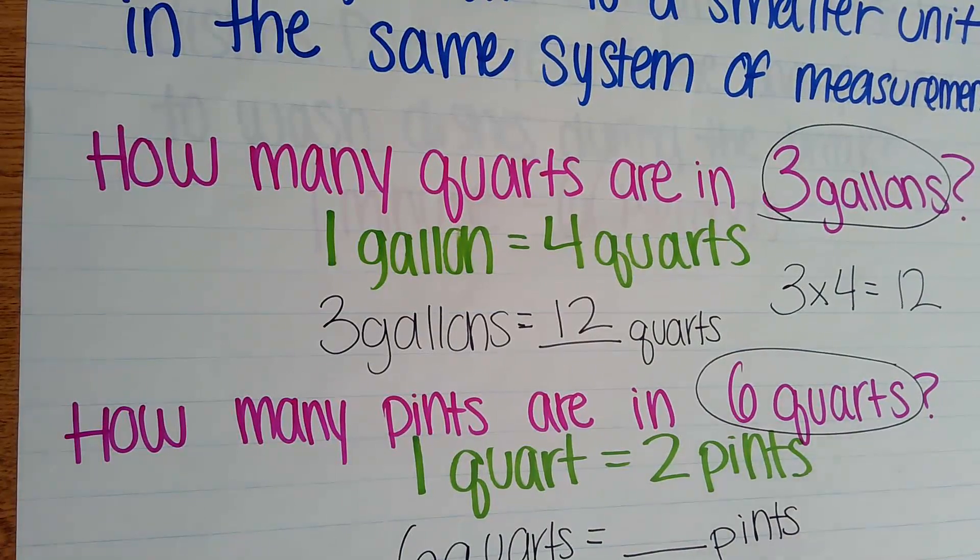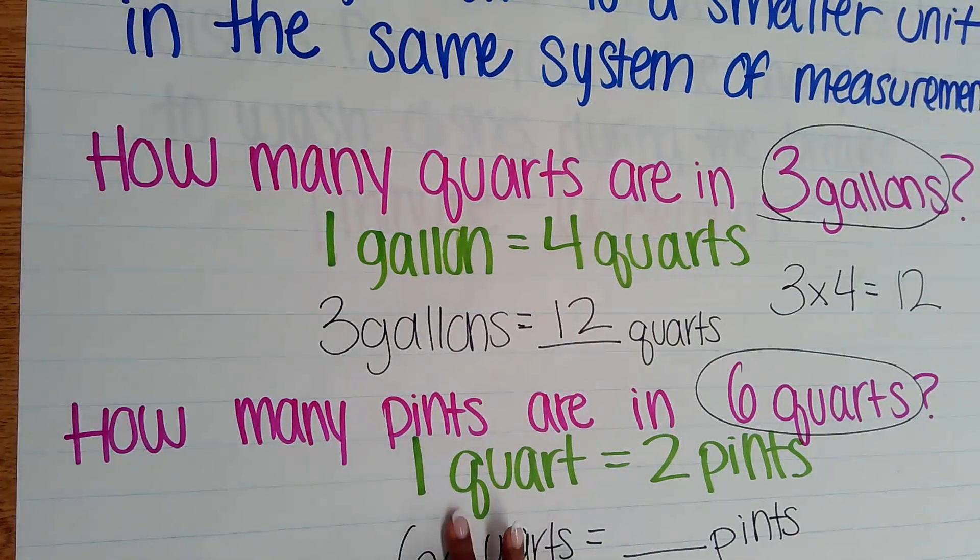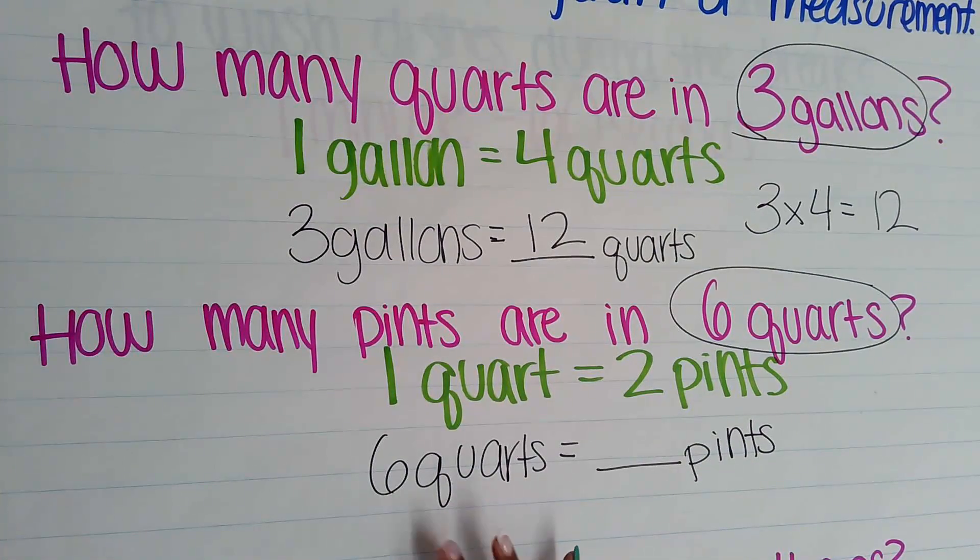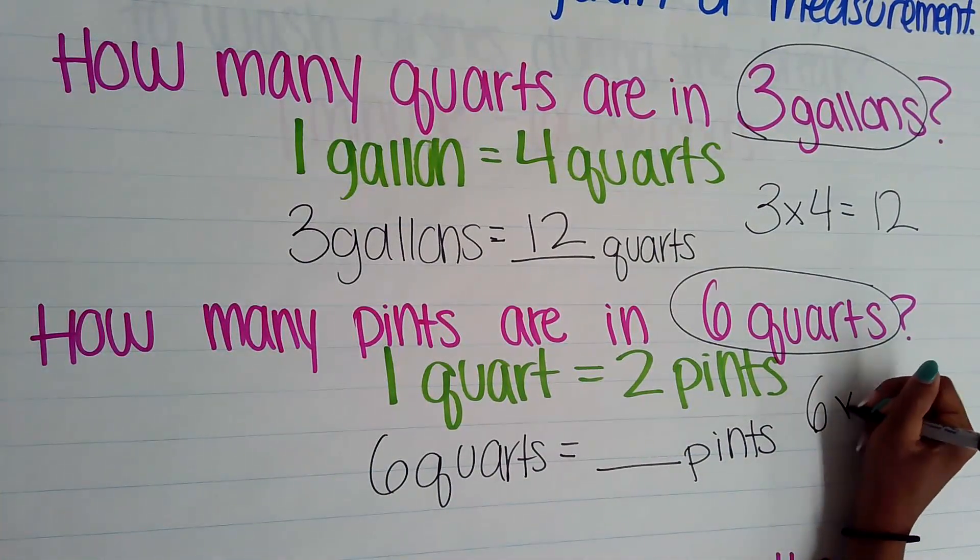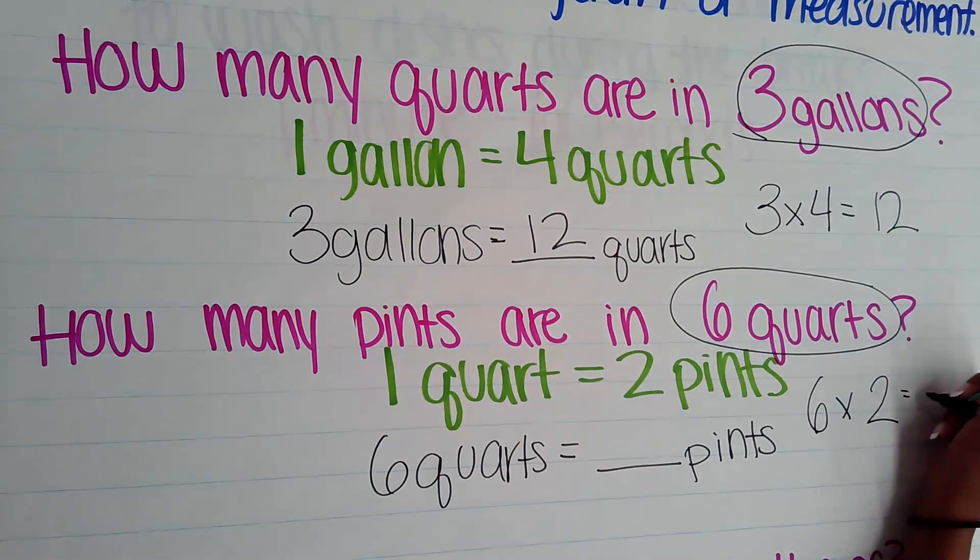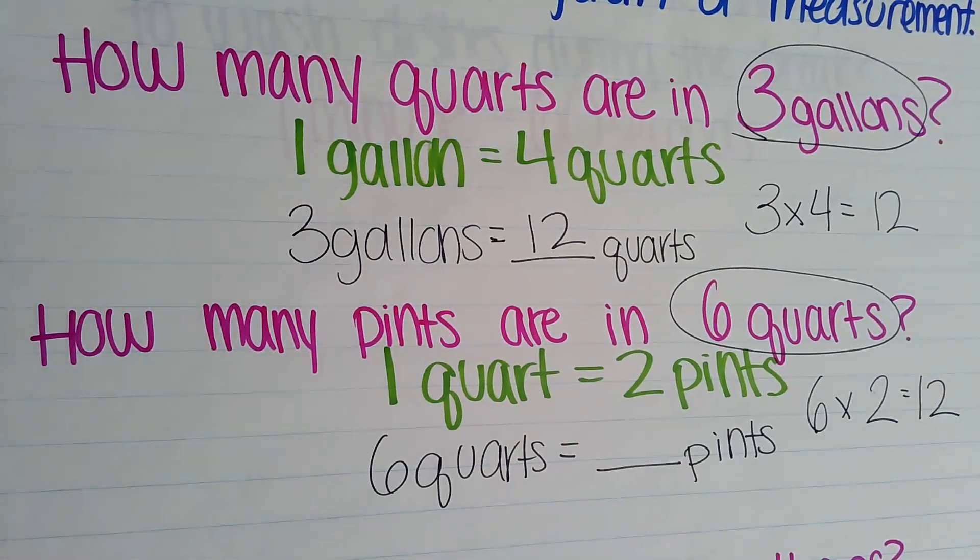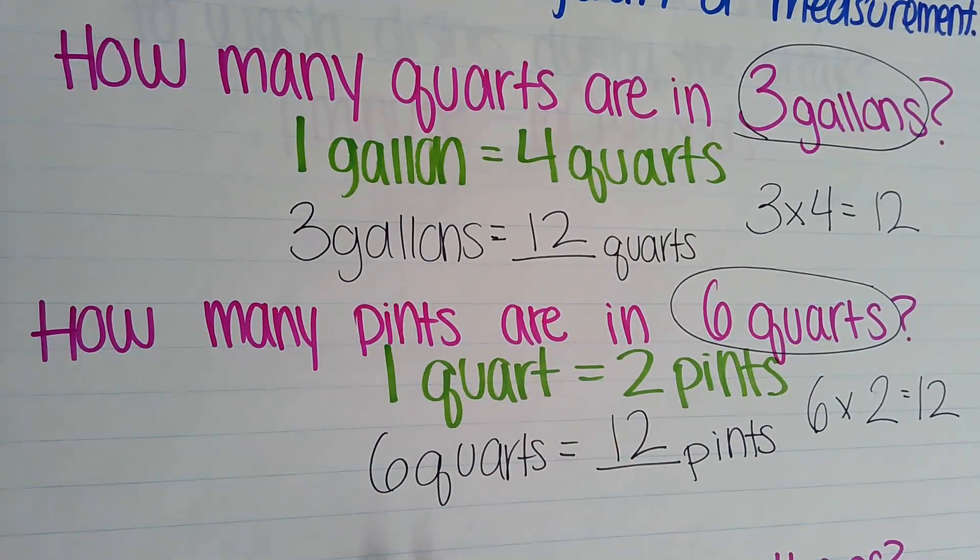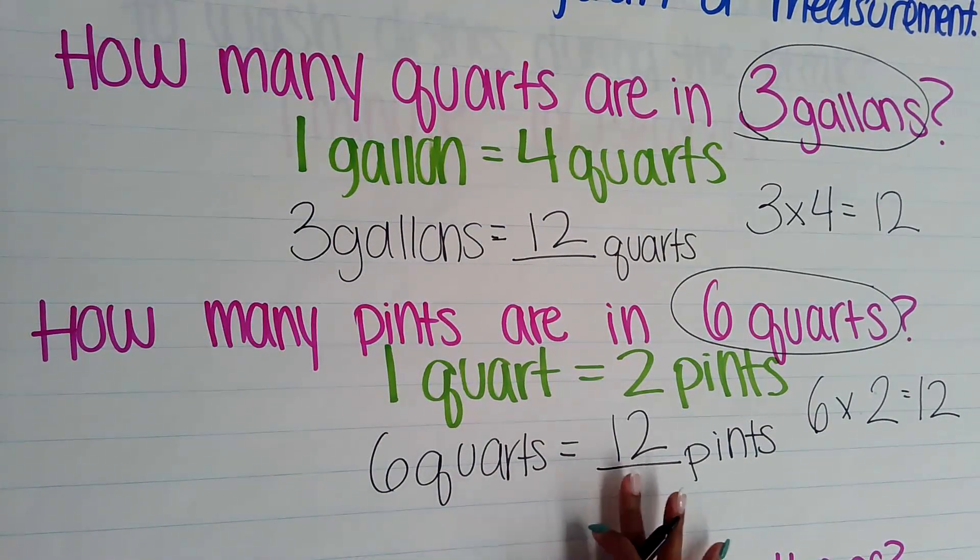Again, one group has 2 pints. I now have six times as many—I have six groups of two. To figure out how many pints I have, I know 6 times 2 gives us 12. So I would have a total of 12 pints. Six quarts is equivalent to 12 pints.